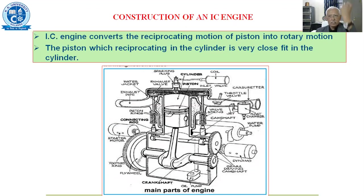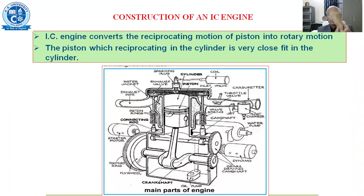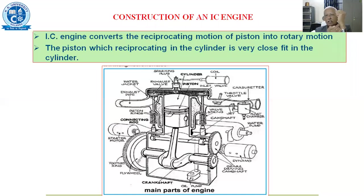The piston is connected to the small end of the connecting rod with the help of a pin. That pin is called the gudgeon pin, or we call it the wrist pin, because this is the wrist. The piston moves straight, while the connecting rod oscillates. So here we'll be having a pin connecting the piston with the small end of the connecting rod.